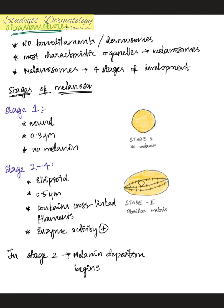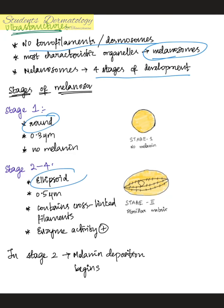Regarding ultrastructure: one of the main characteristics of melanocytes is that they lack tonofilaments and desmosomes, which is why they do not form any junction with the keratinocytes even though their processes extend between them. The most characteristic organelles are melanosomes. There are four stages of melanosome development: stage one is round in shape, and stages two through four are ellipsoid.